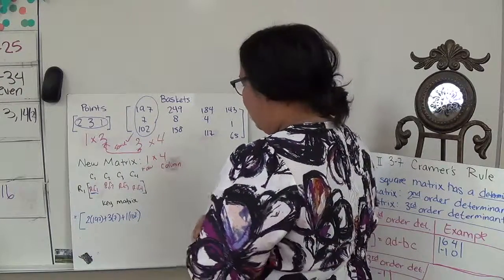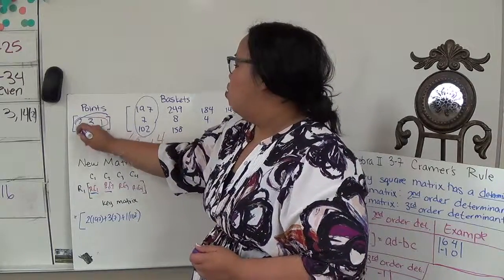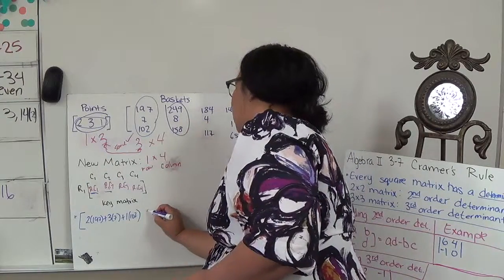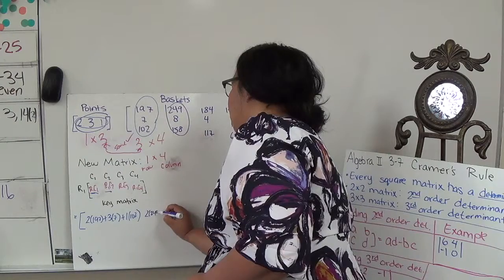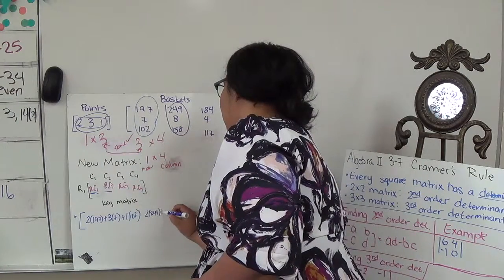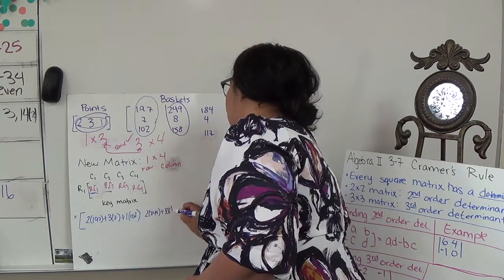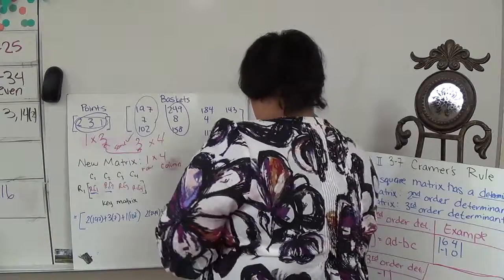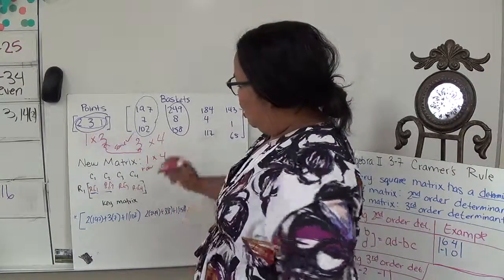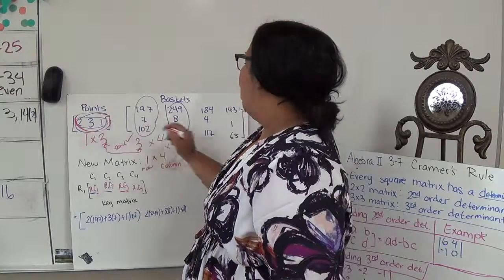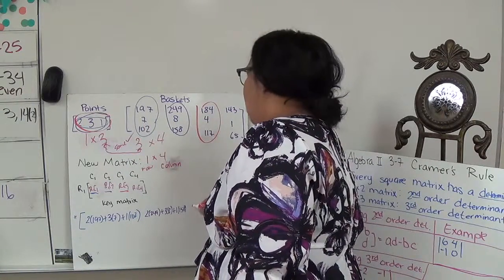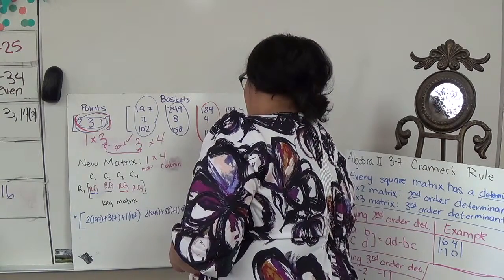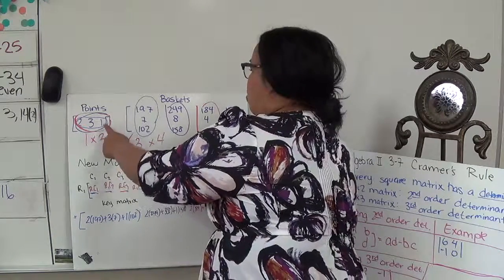Now I'm going to move on to row one, column two. Again using row one, but doing column two: two times 249, plus three times 8, plus one times 158. My next one is row one, column three: two times 184, plus three times 4, plus one times 117.